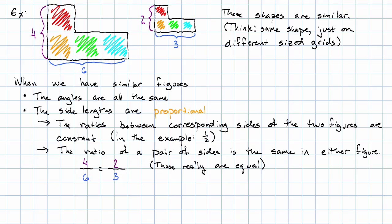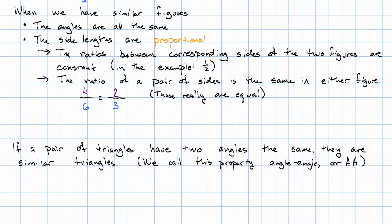Now, we're going to be most interested in similar triangles. Which raises the question: how do we know we have similar triangles? For congruent triangles, we learned lots of rules. For similar triangles, we're really only interested in one. If a pair of triangles have two angles the same, then they are similar triangles.